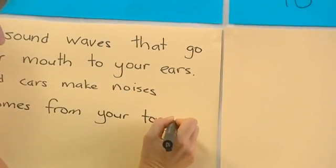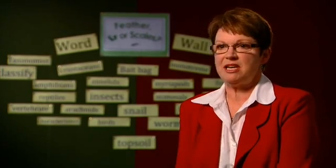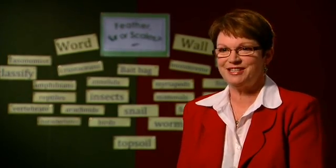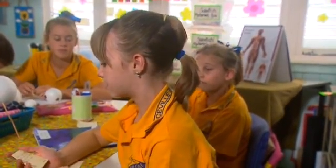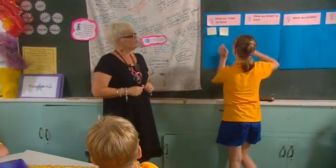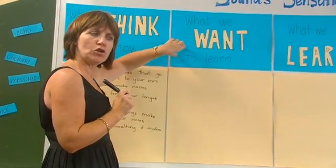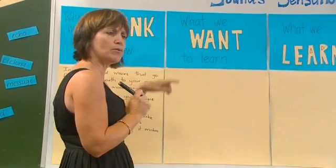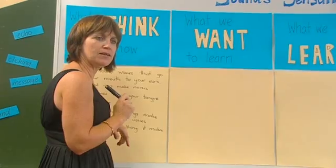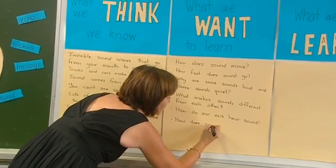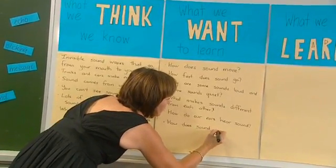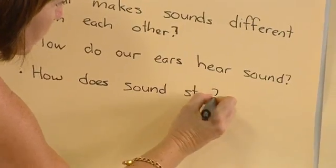The TWLH chart is really like documenting the whole sequence of reasoning. It parallels the thinking process and documents the whole process from go to woe. Any questions that the students might have are recorded in the What We Want to Learn section of the TWLH chart. They're owning the inquiry process by developing their own key questions for us to investigate. By adding the students' thoughts and questions to the TWLH chart, the teacher sets the stage for the next phase: explore.